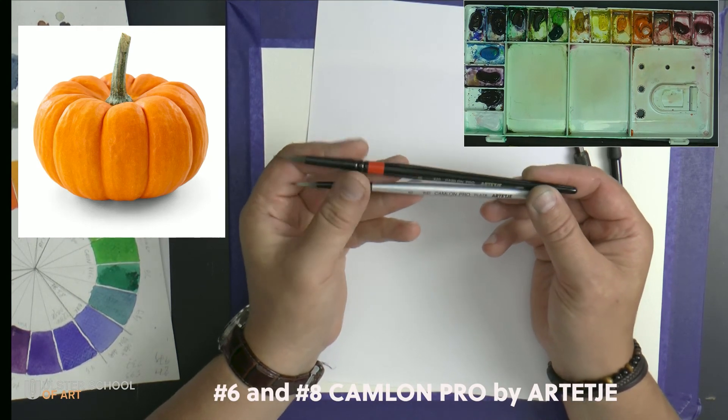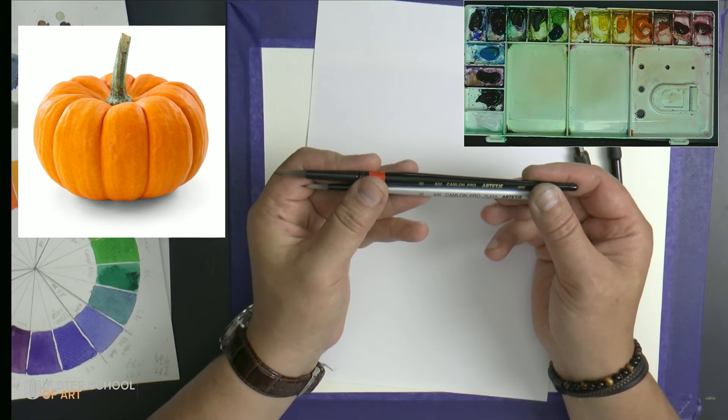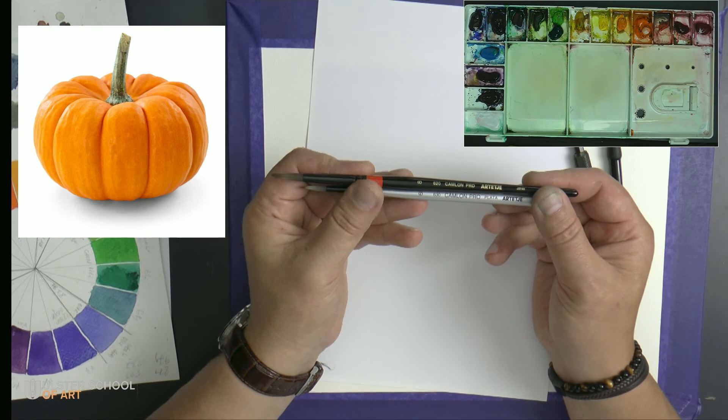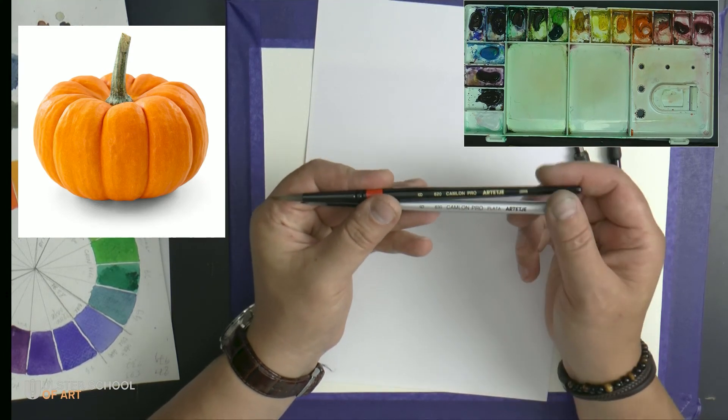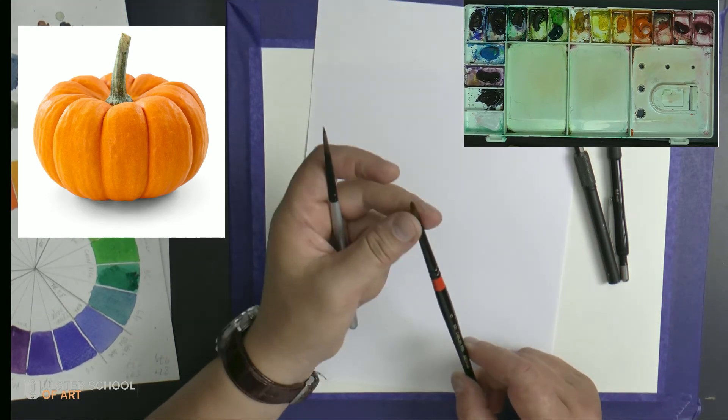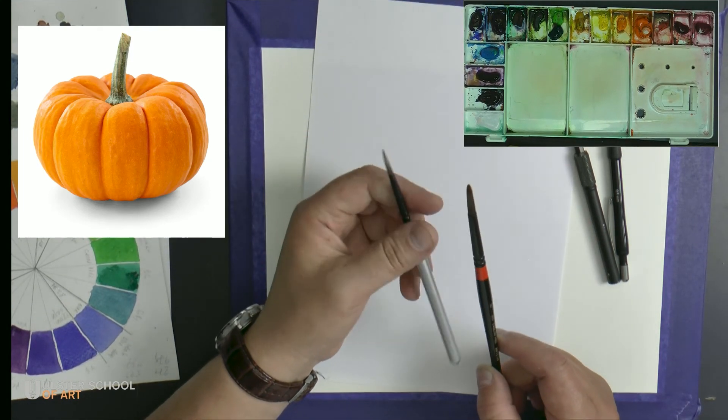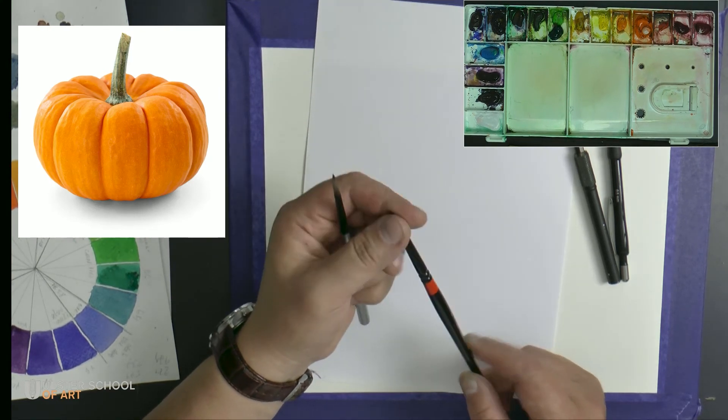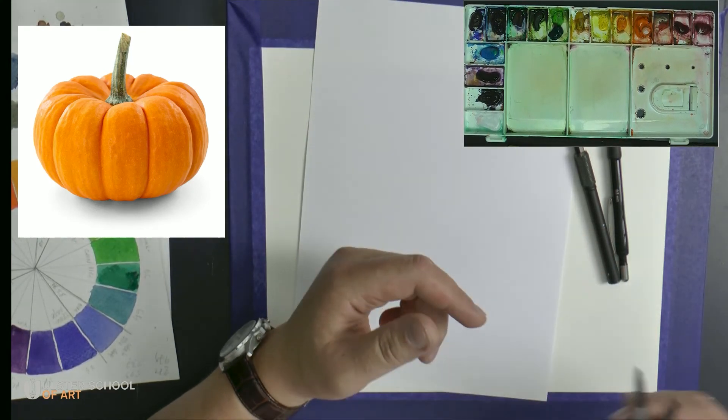And details will be done with these two babies. Art H, also Japanese company. Number six and number eight. Camlon Pro. It says Camlon. Maybe it's Camlon. Anyway, so that's the rough size. They're all round. No specific shapes. Just this one is a little bit tinier for small details.